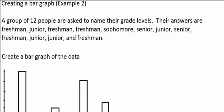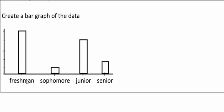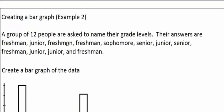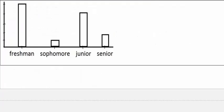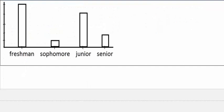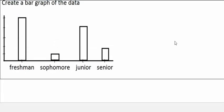Now let's look at one more example. I've asked 12 people to name their grade levels and these are their 12 answers. Remember, if the variable is ordinal, the categories have to follow the correct order on the x-axis. So in this case, the order has to be freshman, sophomore, junior, senior. In my data set we have five freshmen, so that bar goes up to five. We have one sophomore, so that bar goes up to one. And it looks like four juniors and two seniors, which finishes the graph.